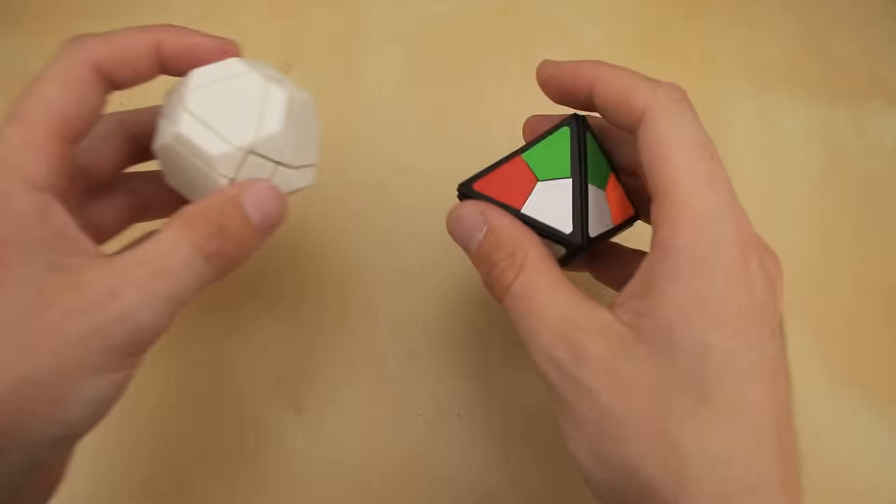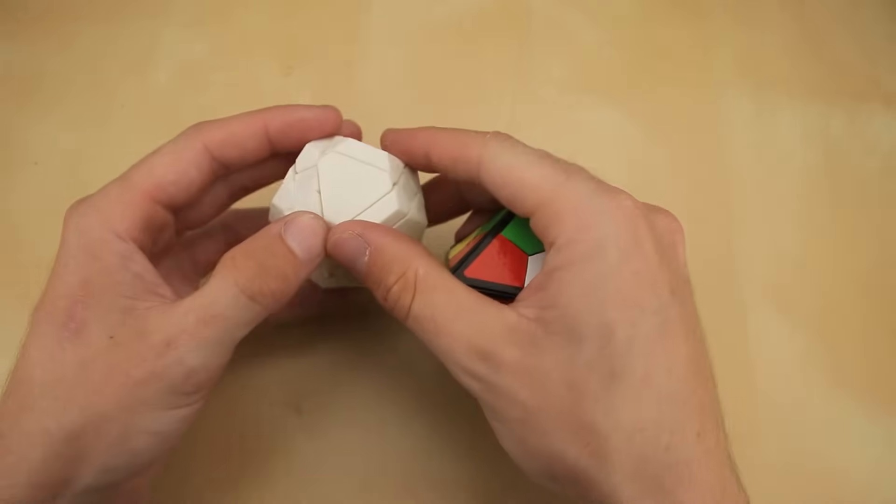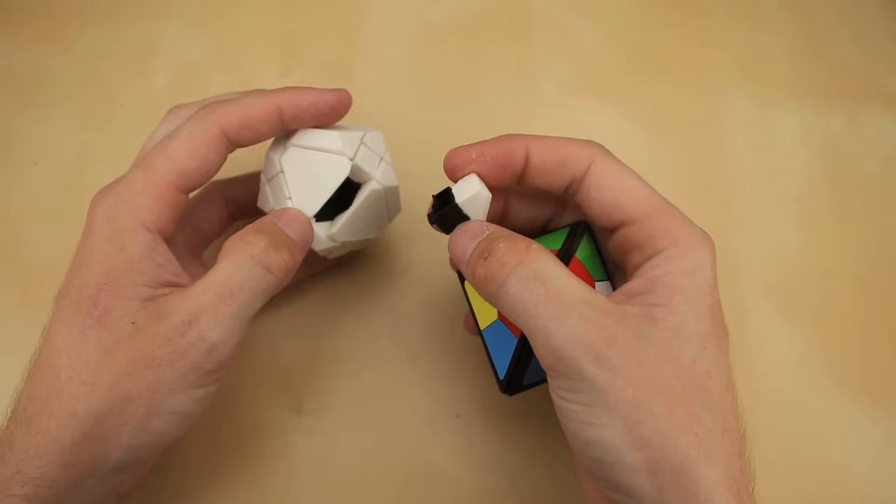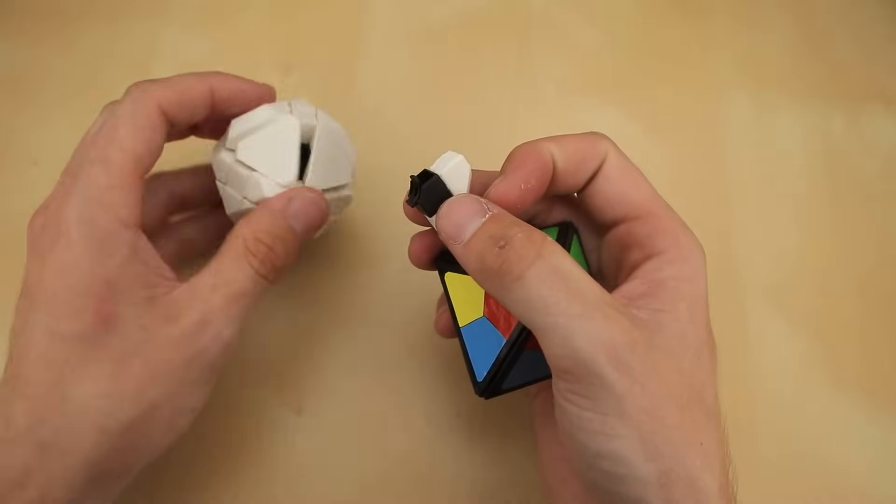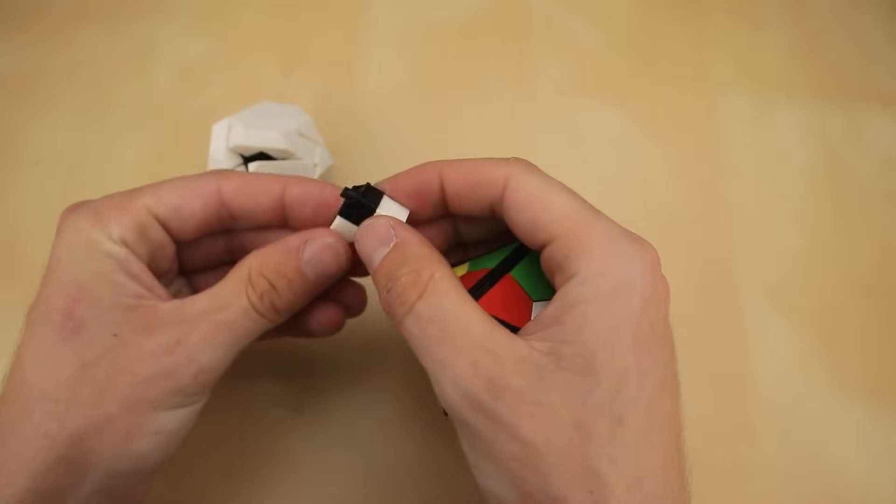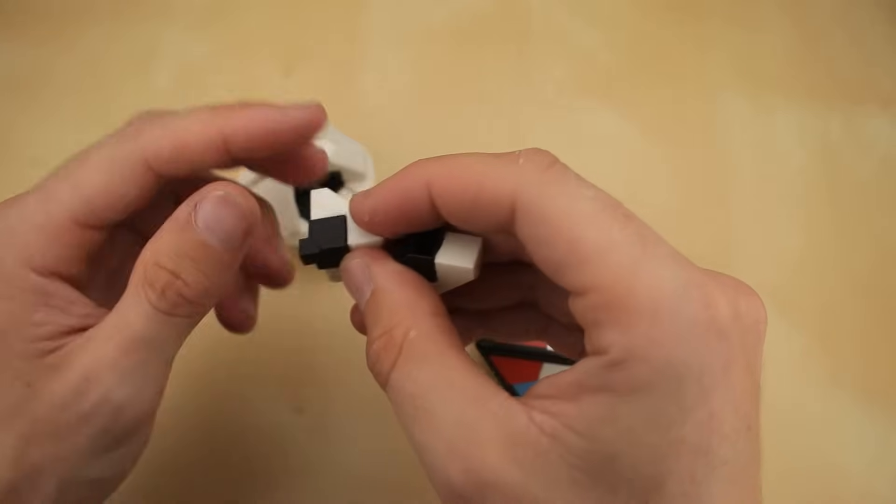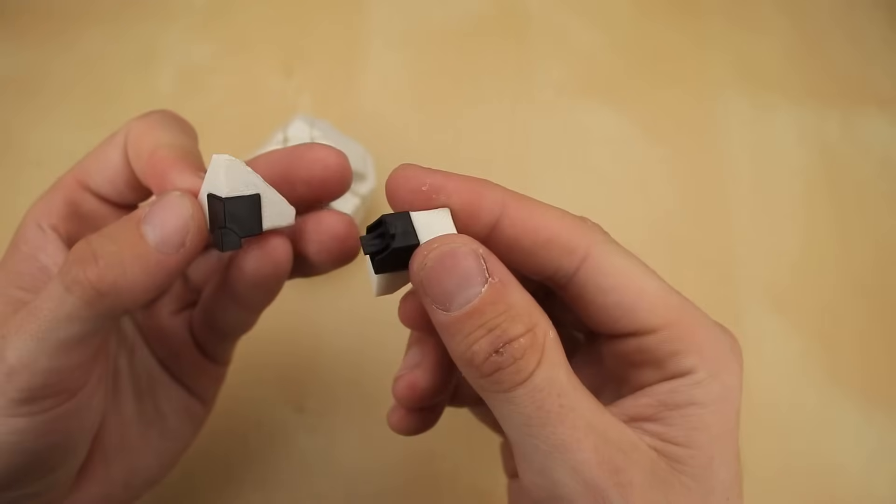So that got me thinking, rather than just printing out extensions that you glue onto an existing twisty puzzle, like I've done with a lot of my past 3D printed mods, why not just print the entire puzzle from scratch? You could easily print with enough detail to pull it off. So now the tricky part would be, how do you design a Rubik's Cube mechanism from scratch?